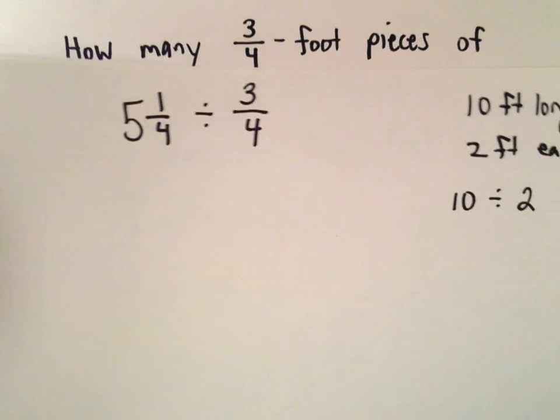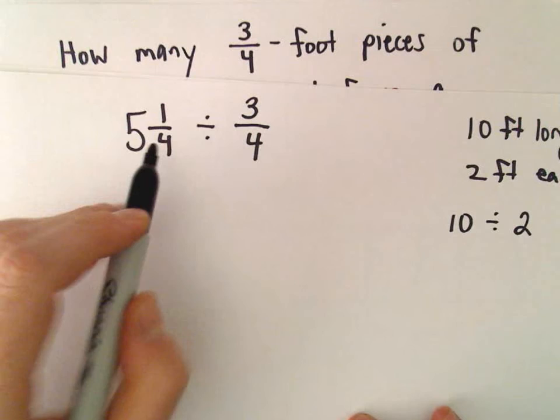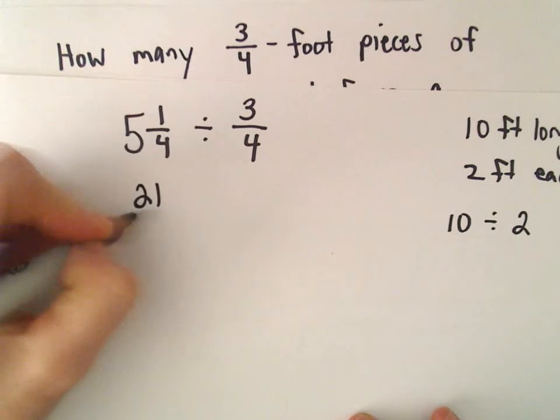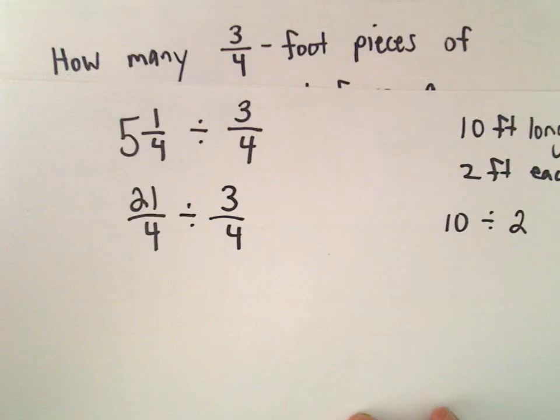And now I say, I've got a mixed number divided by a fraction. I'm going to make these both into fractions. Four times five is 20 plus one will be 21 over four divided by three over four.